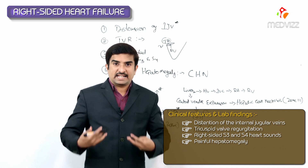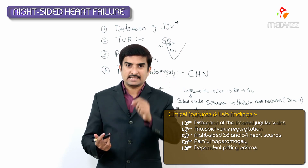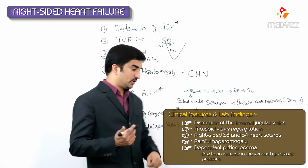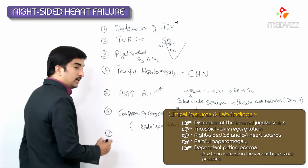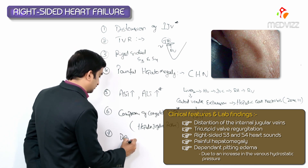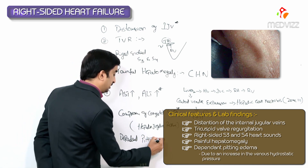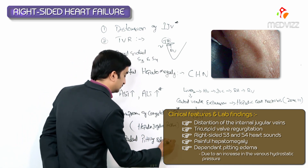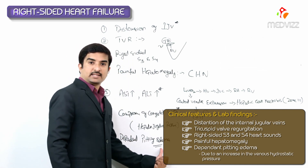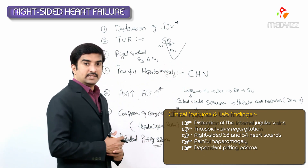Because of pooling of blood in the lower part of the body due to gravity, there will be dependent pitting edema, more commonly seen in the lower limbs. This is mainly due to an increase in the venous hydrostatic pressure.